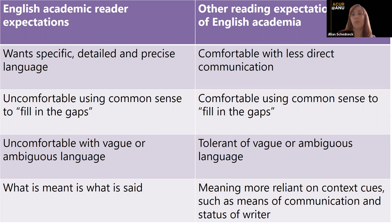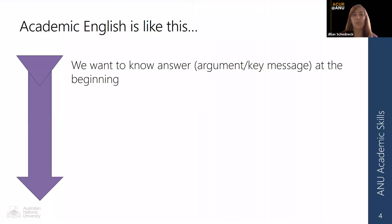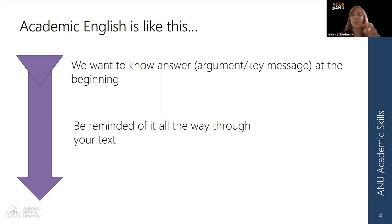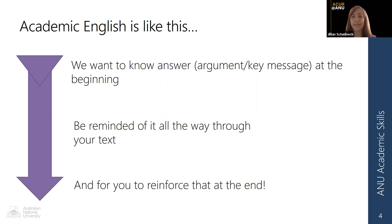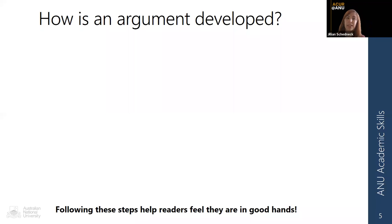What are the expectations of an academic English reader? We want to know your argument and key message at the very beginning — in the first or second paragraph. We want it reinforced throughout your text in topic sentences and concluding sentences. We want that message and its implications reinforced at the end. We don't want to hear the argument at the beginning, then a lot of facts, and only have it reinforced at the very conclusion — it needs to be sustained throughout the body as well.